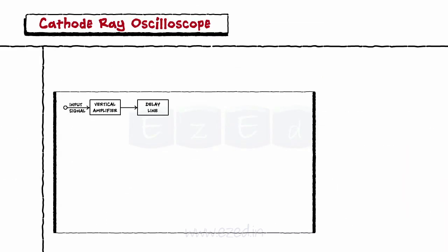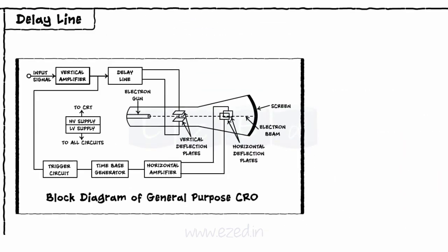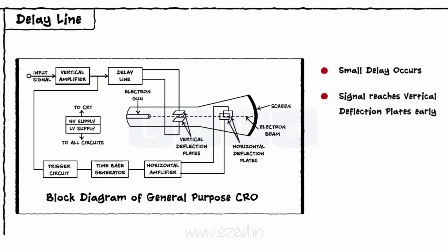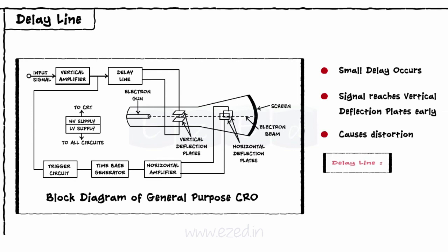The next block is the delay line. The input signal is applied to the horizontal as well as the vertical deflection plates. But before reaching the horizontal deflection plates, the signal passes through different blocks such as trigger circuit, time base generator, and the horizontal amplifier. Thus, a small delay occurs and the signal reaches the vertical deflection plates before the horizontal plates, causing distortion of the signal on the screen. To avoid this situation, a small amount of delay is added using the delay line block after the vertical amplifier.